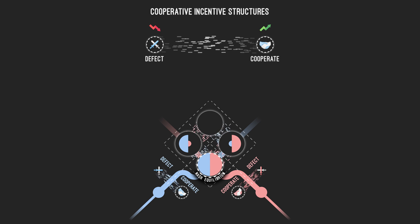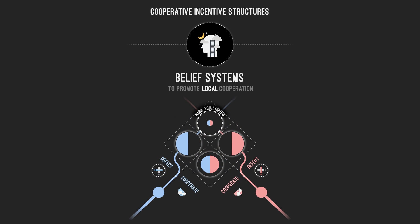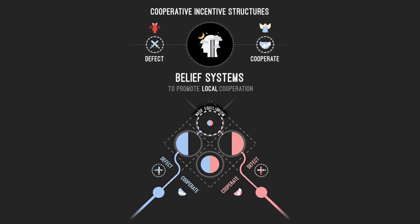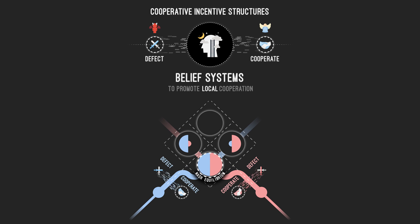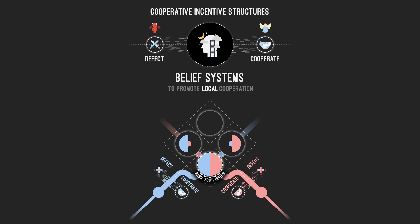Some of the most ancient incentive structures are belief systems. Some belief systems, like religions, used to act as incentive structures by imposing moral codes that made people believe they would be sanctioned for their defective behavior and rewarded for their cooperative behavior. These ancient incentive structures were paramount to promoting cooperation at local scales, but they proved insufficient to promote cooperation in larger communities, where not everyone followed the same belief systems.